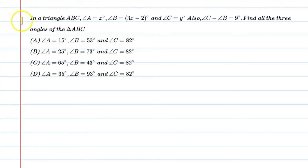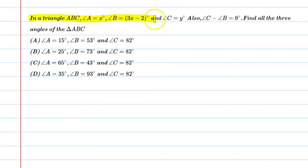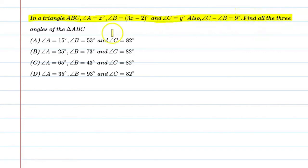Hello students, let's solve this question. In a triangle ABC, angle A is equal to x degree, angle B is equal to 3x minus 2 degree, and angle C is equal to y degree. Also, angle C minus angle B is equal to 9 degree. Find all the three angles of triangle ABC.